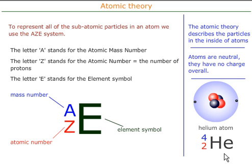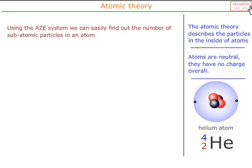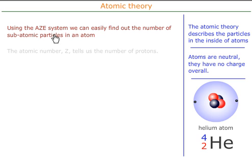So the representation for helium would be 4 over 2 He. This tells me there's a mass of 4, which is the sum of the protons and the neutrons, and that there are two protons. So if we use this system, we can easily find out the number of subatomic particles in an atom.